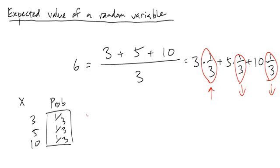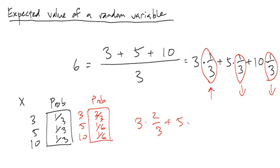If instead I had a different probability table here, 3, 5, and 10, where I have the probabilities 2/3, 1/6, and 1/6, then the expected value of X would be 3 times 2/3 plus 5 times 1/6 plus 10 times 1/6, which is equal to 2 plus 15/6.